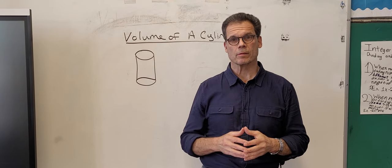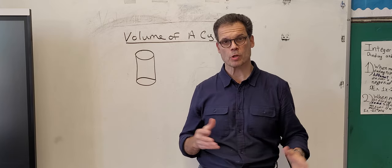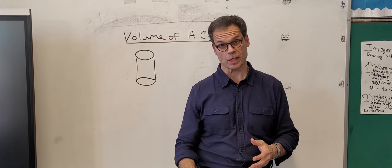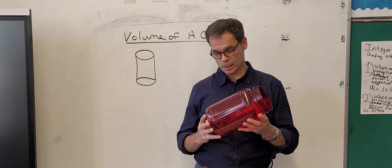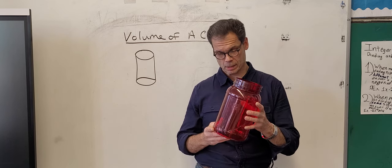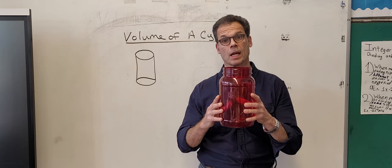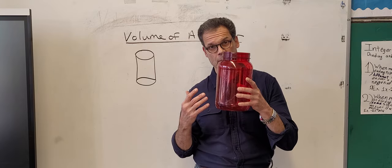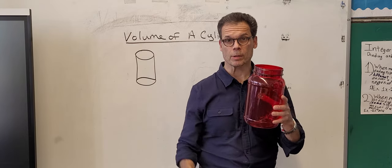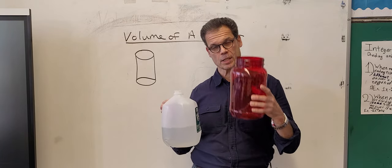We're talking about volume of a cylinder and the way we start is by looking at a cylinder. This is a cylinder and as you can see it has a certain shape. We're going to look at this shape and examine it with water.